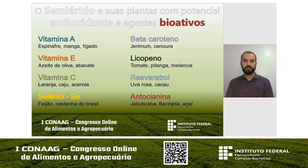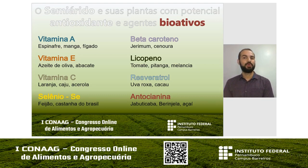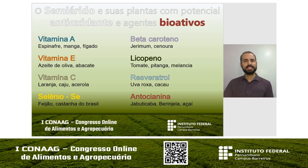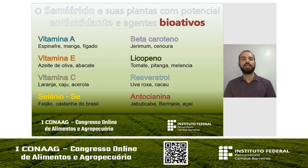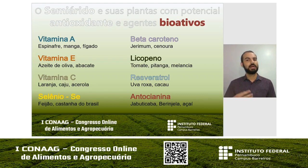O resveratrol também é outro agente bioativo, muito encontrado em uva roxa e cacau. Existem muitos experimentos recentes com o resveratrol para identificar os seus efeitos benéficos nos organismos. Outro pigmento de grande importância é a antocianina, presente na jabuticaba, na berinjela e no açaí — um pigmento responsável pela coloração arroxeada dessas frutas, que é também um agente bioativo com atividade antioxidante.